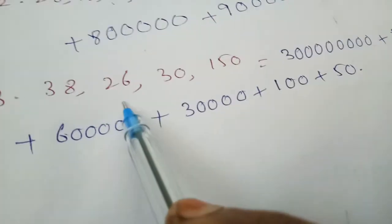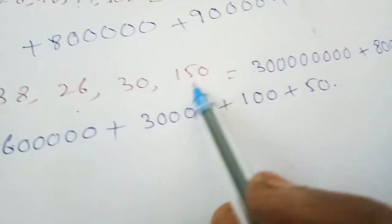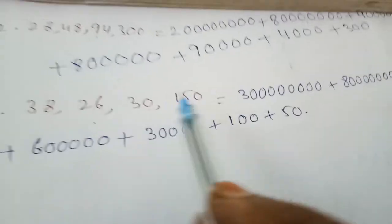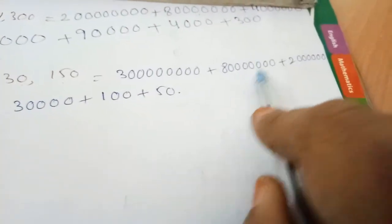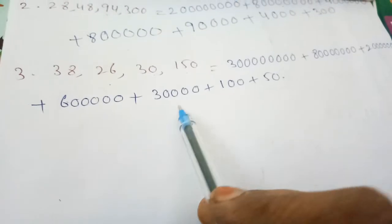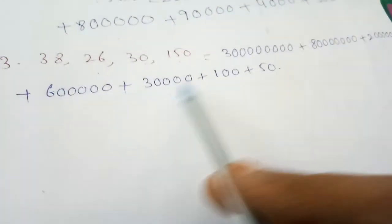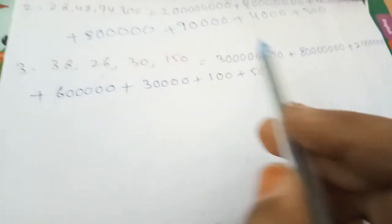Our last number is 38 crore 26 lakh 30,150. In expanded form: 30 crore plus 8 crore plus 20 lakh plus 6 lakh plus 30 thousand plus 100 plus 50.